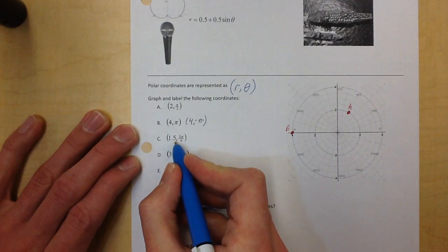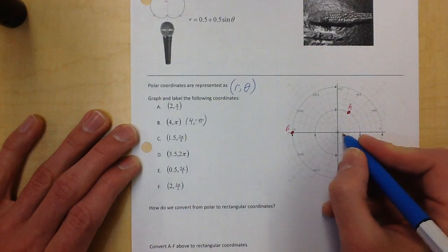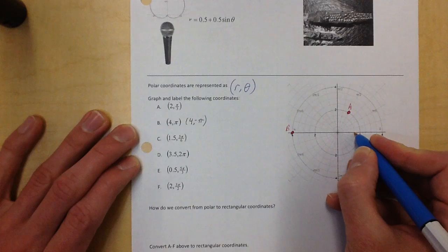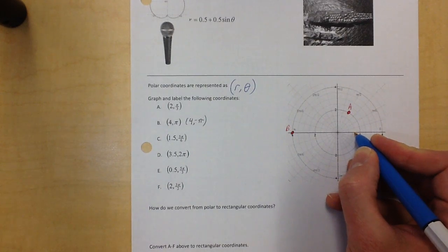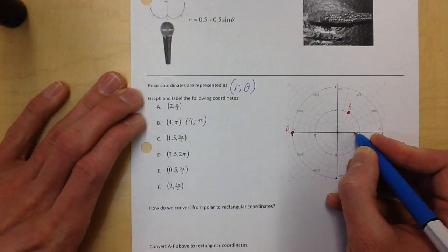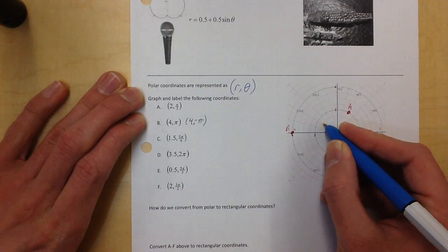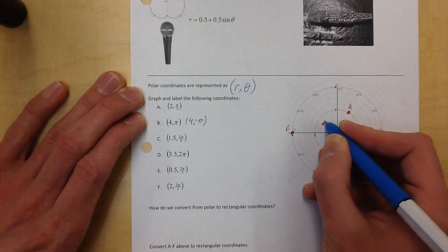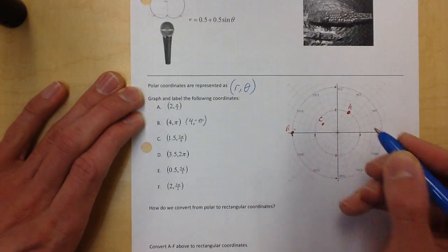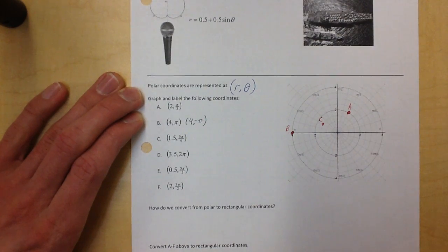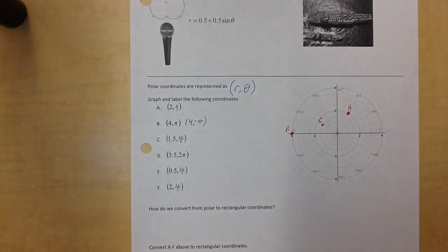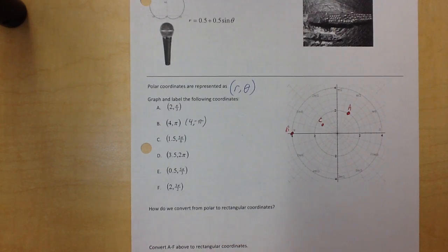Let's graph c: (1.5, 5π/6). So one and a half, and then we're going to go around 5π/6 radians. We stay on this little circle right here until we get to 5π/6, and that is c. I recommend that you pause it here and try the other ones, because you'll have to know how to graph these on your own.